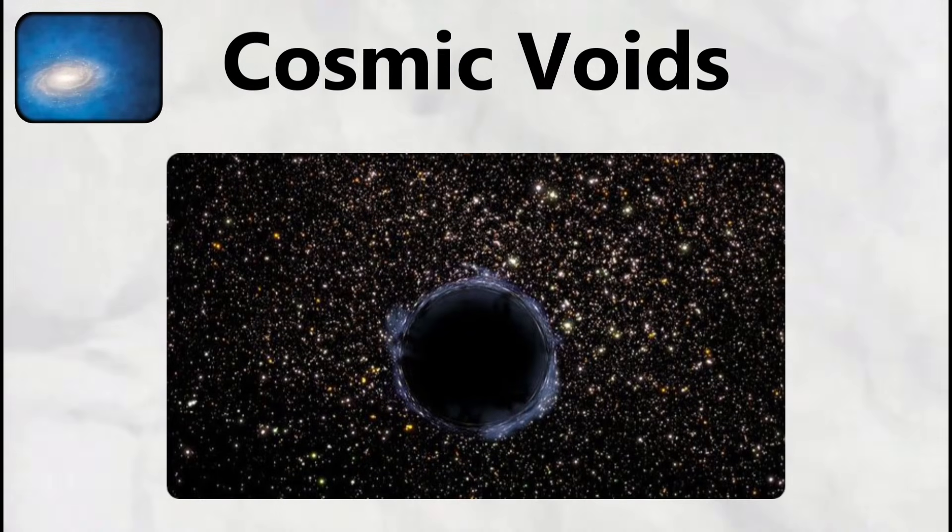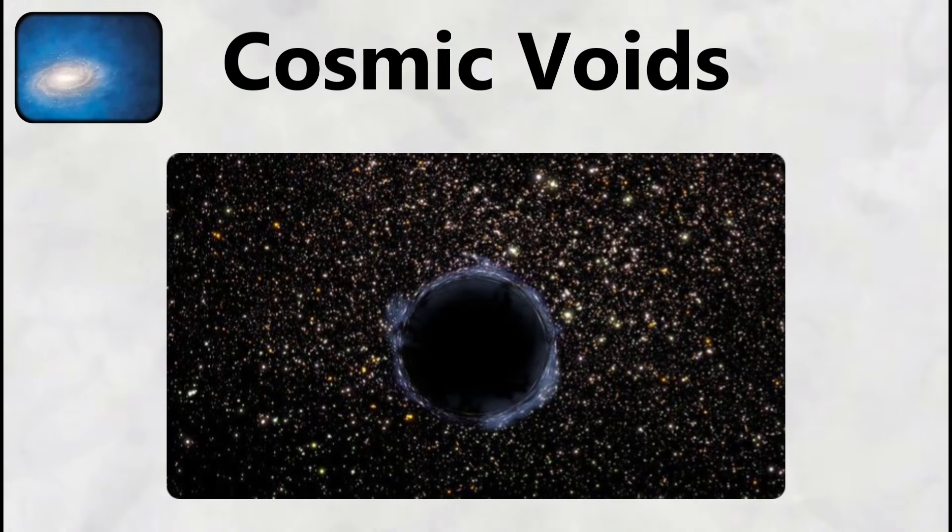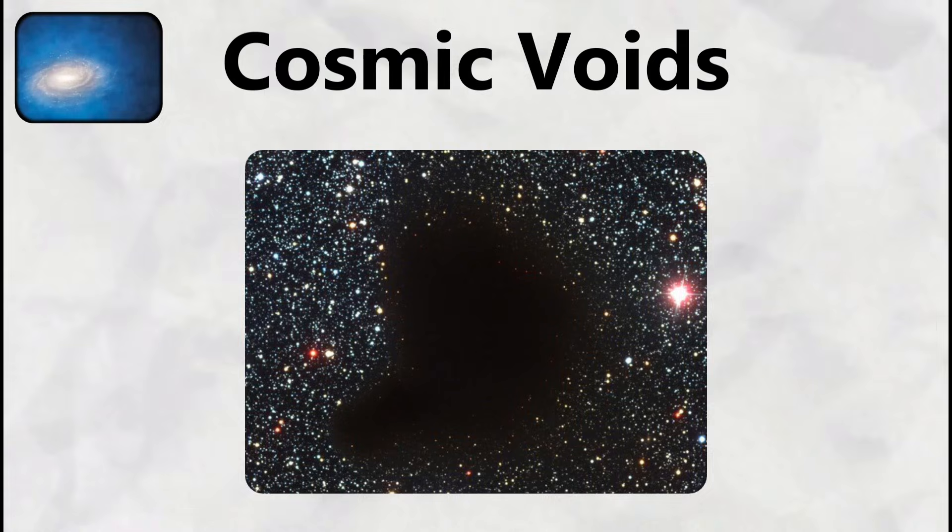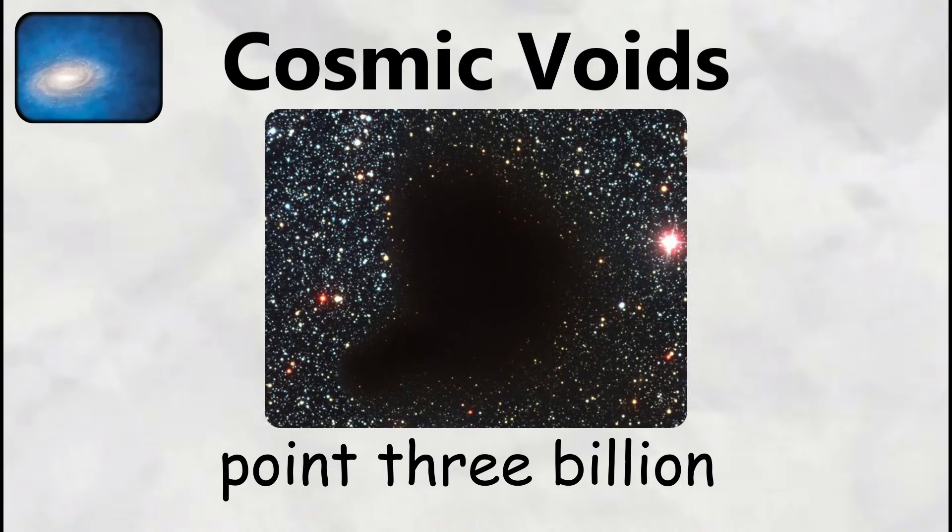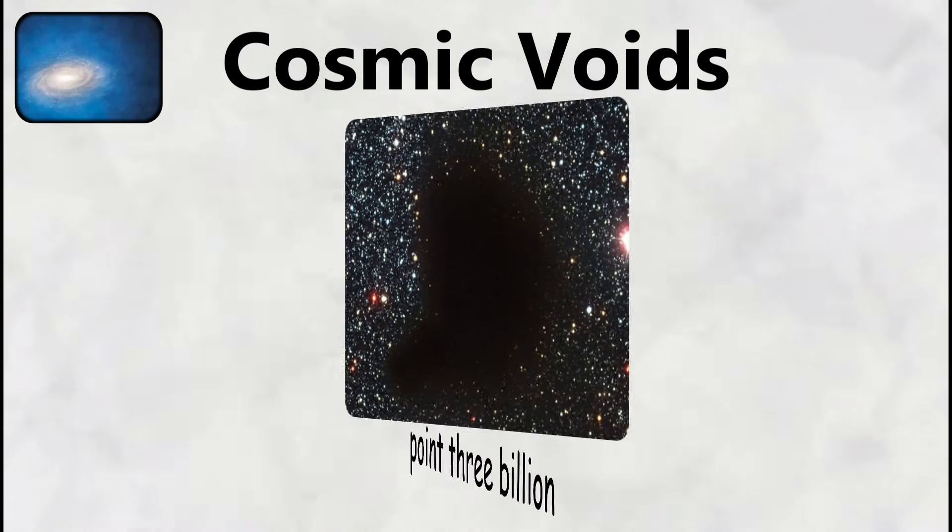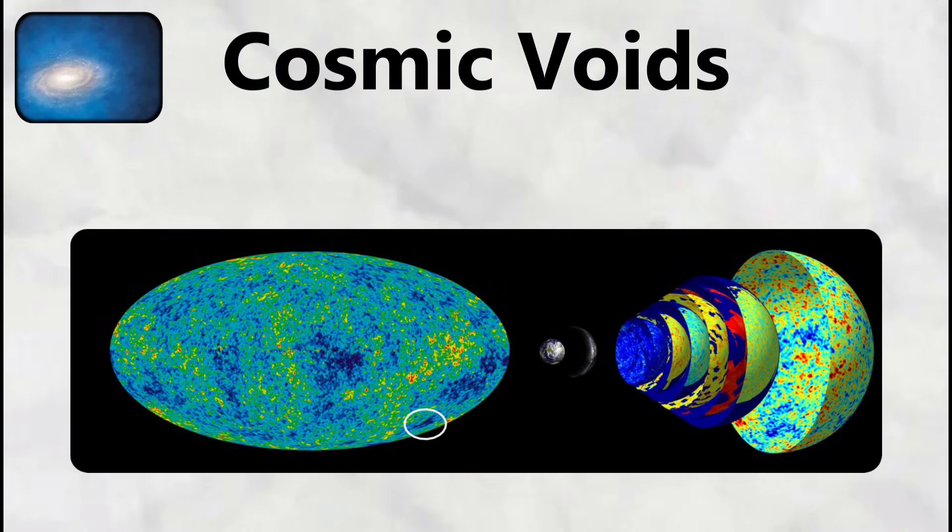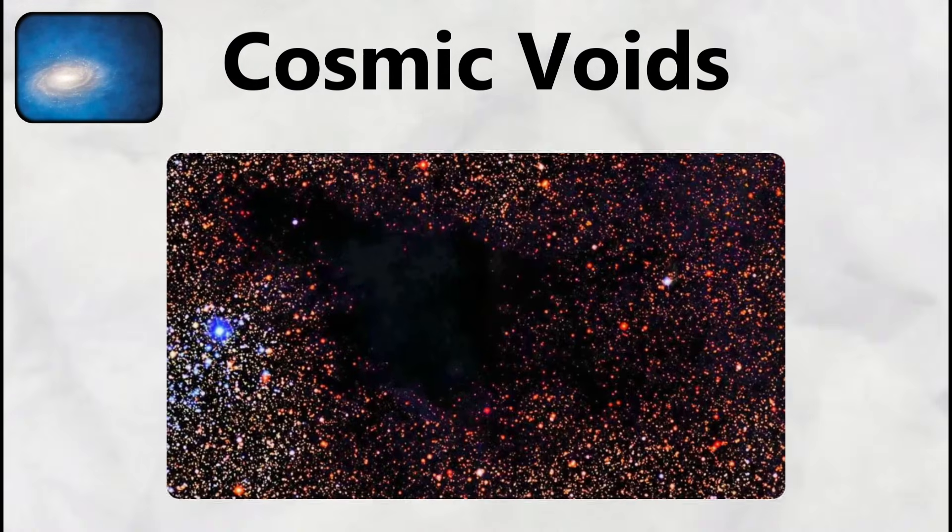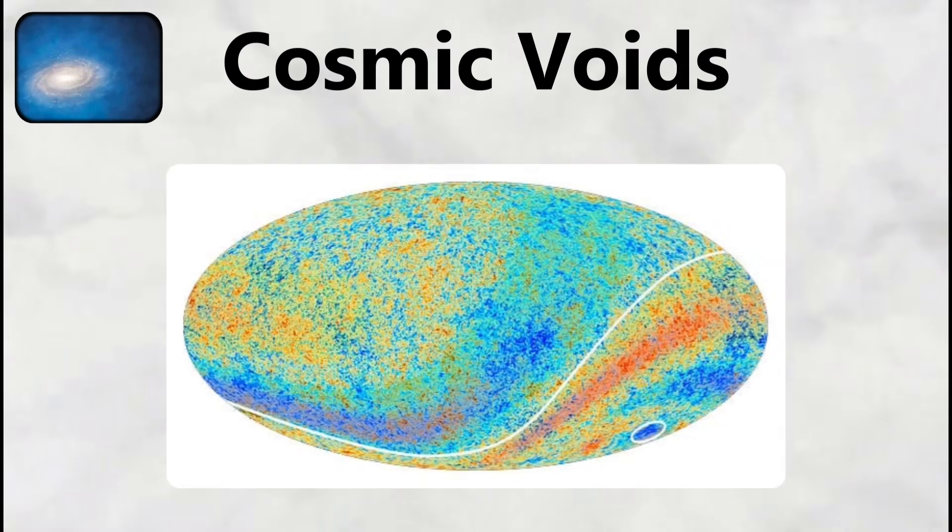The Eridanus supervoid presents an even more mysterious cosmic emptiness that spans roughly one billion light years across. Located about 1.3 billion light years away in the direction of the constellation Eridanus, this supervoid was discovered through observations of the cosmic microwave background radiation, the afterglow of the Big Bang itself.